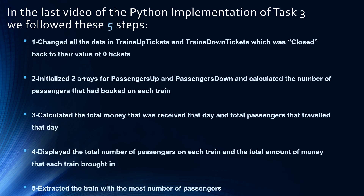First, we changed all the data in trains up tickets and trains down tickets that was closed back to their value of zero tickets. Then we initialized two arrays — one to hold how many passengers went up on the up trains, and passengers down was an array to hold how many passengers went down on the down trains. After that, we calculated the total amount of money received that day and the total number of passengers that traveled that day, and we displayed it. For number four, we displayed the total number of passengers on each train and the total amount of money that each train brought in. And in step five, we extracted the train with the most number of passengers.